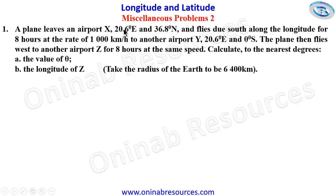Problem one: a plane leaves an airport X at 20.6 degrees east and 36.8 degrees north, and flies due south along the longitude for eight hours at the rate of 1,000 kilometers per hour to another airport Y at 20.6 degrees east and theta degrees south. The plane then flies west to another airport Z for eight hours at the same speed. Calculate to the nearest degrees: (a) the value of theta, and (b) the longitude of Z.